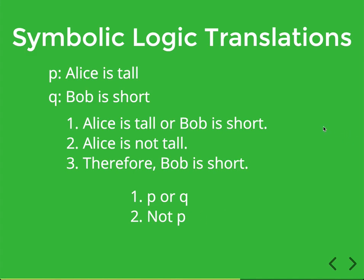For the conclusion 'therefore Bob is short,' we have Bob is short, which is Q. 'Therefore' is an indicator word in English that keys you into the logical structure of what you're reading; however, it doesn't add anything to the argument itself. So we can just leave it out when doing our translation, and the conclusion is simply Q.